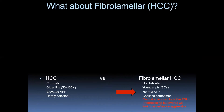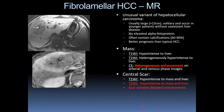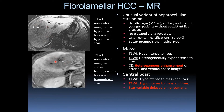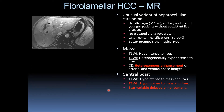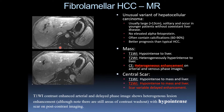Fibrolamellar HCC is an unusual variant of hepatocellular carcinoma — usually larger, solitary, in younger patients without coexistent liver disease or cirrhosis. Usually no elevated AFP; 60–90% can contain calcifications; better prognosis than typical HCC, although still a malignancy. Typical features: T1 dark, heterogeneously T2 bright, heterogeneous enhancement on arterial and venous phase. The central scar is typically T1 dark and T2 dark with variable delayed enhancement. On imaging: hypointense, heterogeneously T2 bright with a hypointense central scar, and heterogeneous enhancement with hypo-enhancement of the central scar but areas of washout within the lesion.